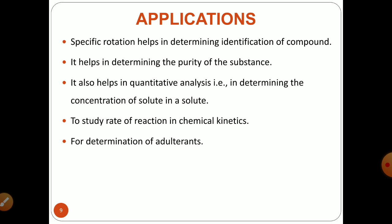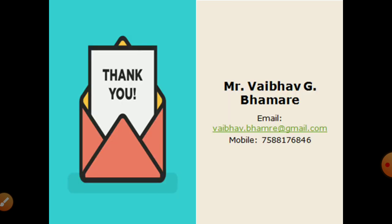There are various applications of optical activity and specific rotation, which help in identifying compounds. It also helps in determining the purity of a substance, providing both quantitative and qualitative analysis. If you are studying any reaction that changes with time, optical rotation or specific rotation is the key factor to study the rate of reaction. Additionally, if any adulterant is present in your substance, you can identify it because it will not comply with the optical or specific rotation of the standard. This concludes the discussion on optical activity. Thank you.